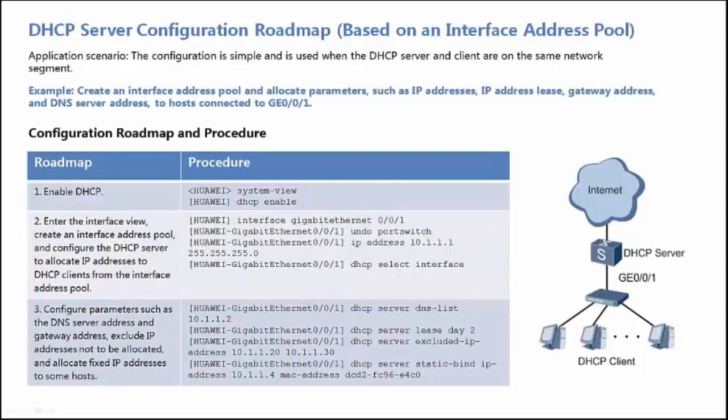A DHCP Server can be configured based on an Interface Address Pool or a Global Address Pool. First, let's see how to configure a DHCP Server based on an Interface Address Pool. This configuration is simple and can be used when the DHCP Server and the DHCP Client are on the same network segment.